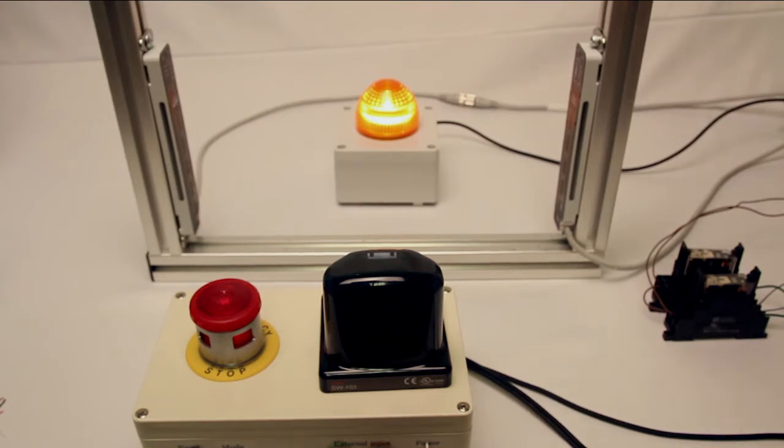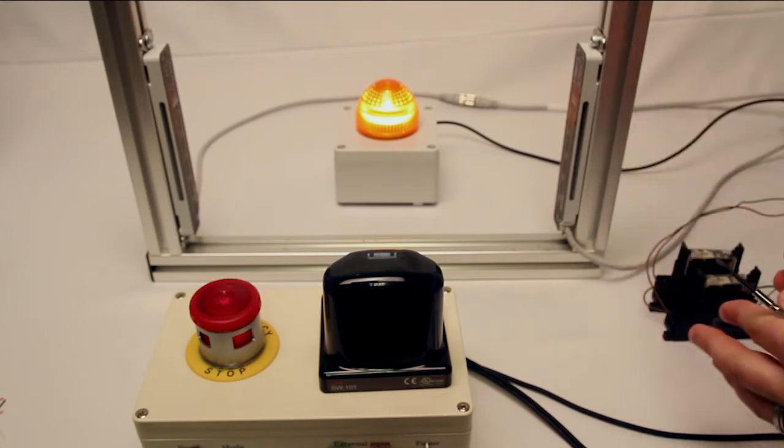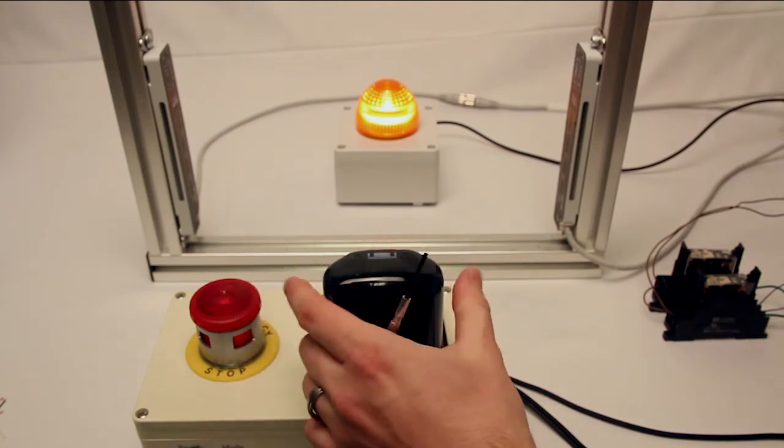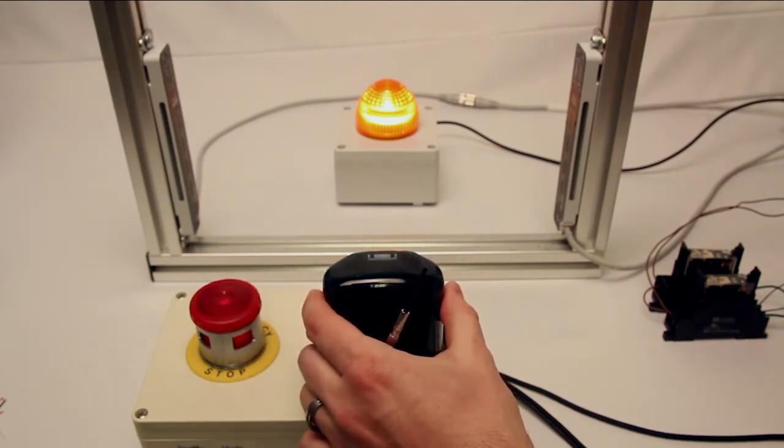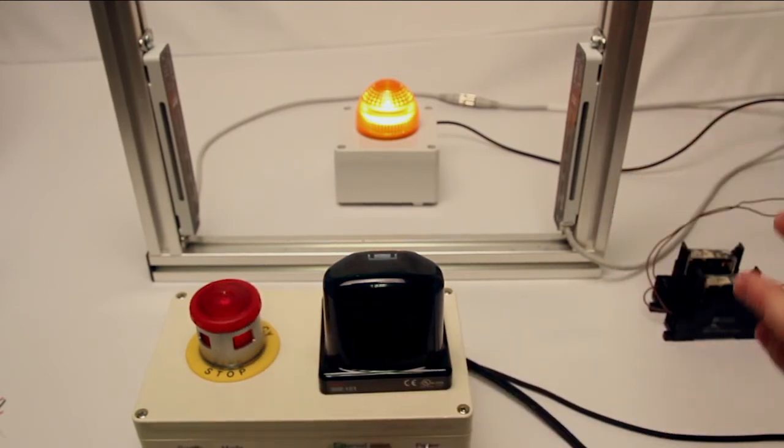So what this actually does is it's going to take all of your safety peripherals and monitor them using just the light curtain itself. On a typical machine, you may have more than just a light curtain. Maybe you have a door switch or an e-stop switch, or in this case, one of our SW101 touch switches. All of these are going to be fed into the light curtain so that you don't need an extra controller.